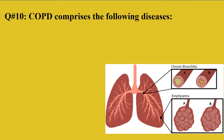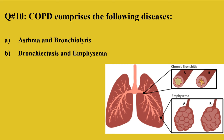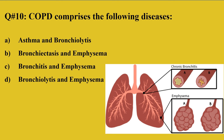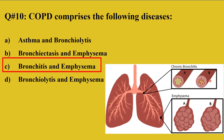Question 10: COPD comprises which diseases? COPD means chronic obstructive pulmonary disease. A: Asthma and bronchiolitis, B: Bronchiolitis and emphysema, C: Bronchitis and emphysema, D: Bronchiolitis and emphysema. The right option is C — bronchitis and emphysema. Bronchitis is inflammation of the lining of the respiratory tract, and emphysema is the disease in which the septum of the alveoli are dissolved.